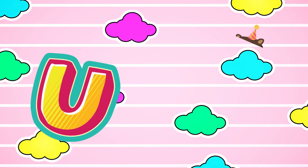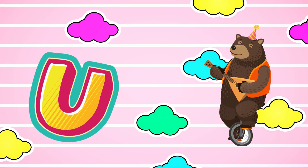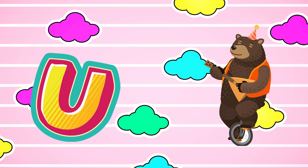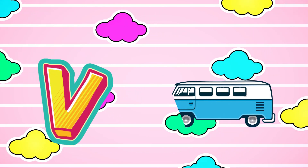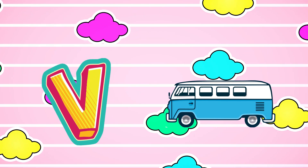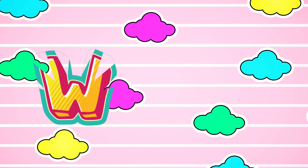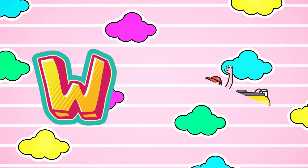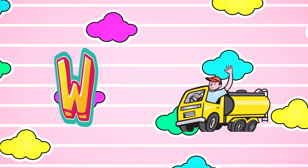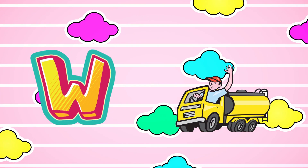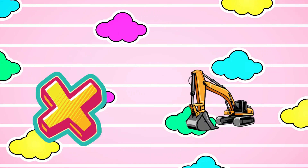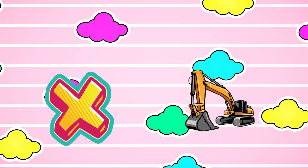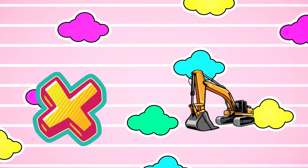U is for Unicycle. Unicycle. V is for Van. Van. W is for Water Tanker Truck. Water Tanker Truck. X is for Excavator. Excavator.